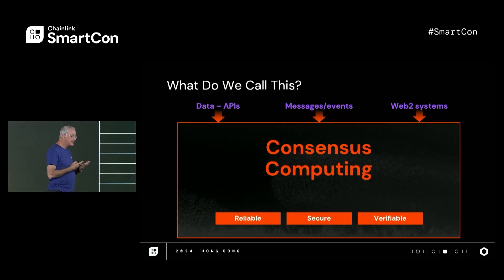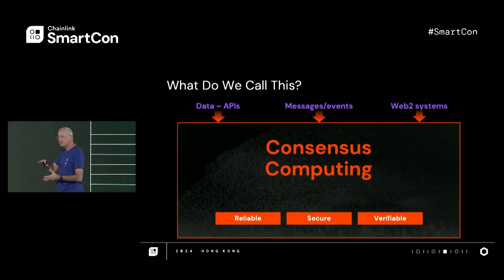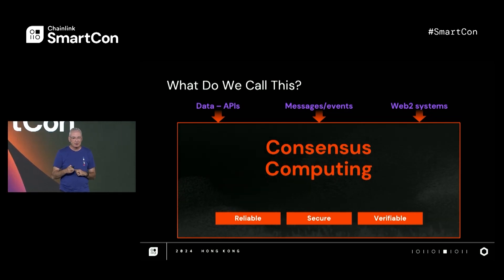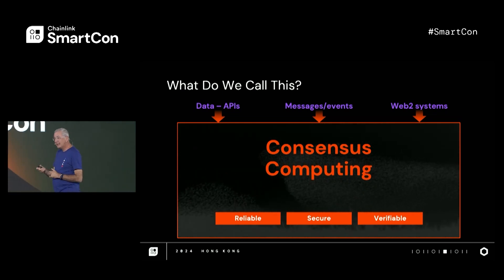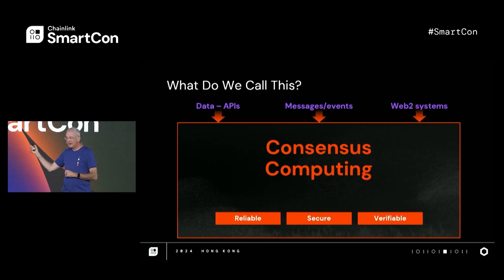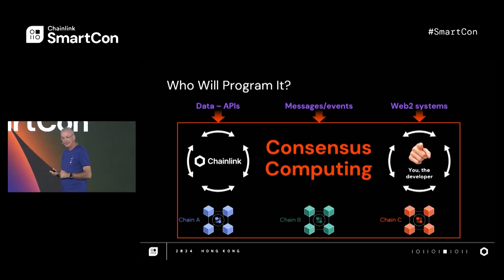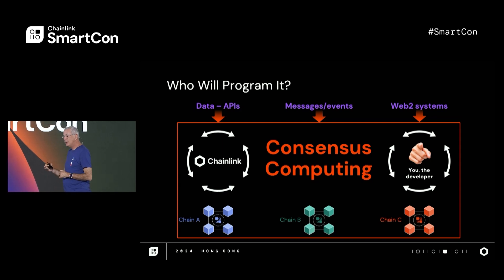What do we call this? Consensus computing. This is an age of consensus computing — there's consensus of various types all across these things. The key question is: how do you program oracle networks and smart contracts to achieve all of that consensus and get you those properties? That's the key to being efficient and effective in this world. We've worked hard for years to figure that out, and today I'm going to talk to you about making it programmable — to make it really easy to achieve any use case, your use case, very quickly.